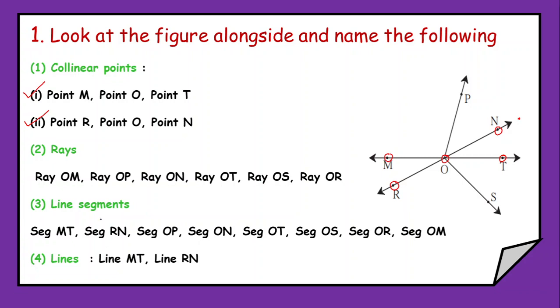Now the next is rays. We have to name the rays. Now what is a ray? It starts with a point and ends with an arrow. Now if I look into the figure, there are enormous rays which are emerging from this point O.